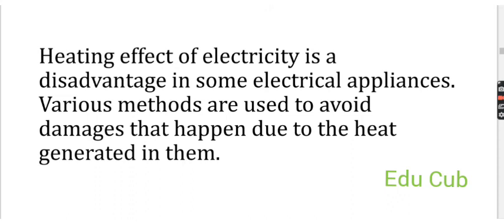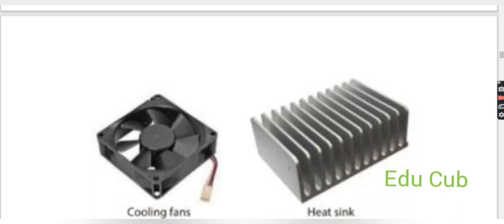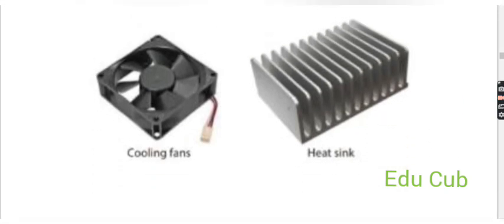The heating effect of electricity is a disadvantage in some electrical appliances, and various methods are used to avoid damage caused by the heat generated. For example, cooling fans are used in computers to cool such appliances. Heavy-duty semiconductors such as transistors produce heat, so a heat sink is used to cool the appliance.